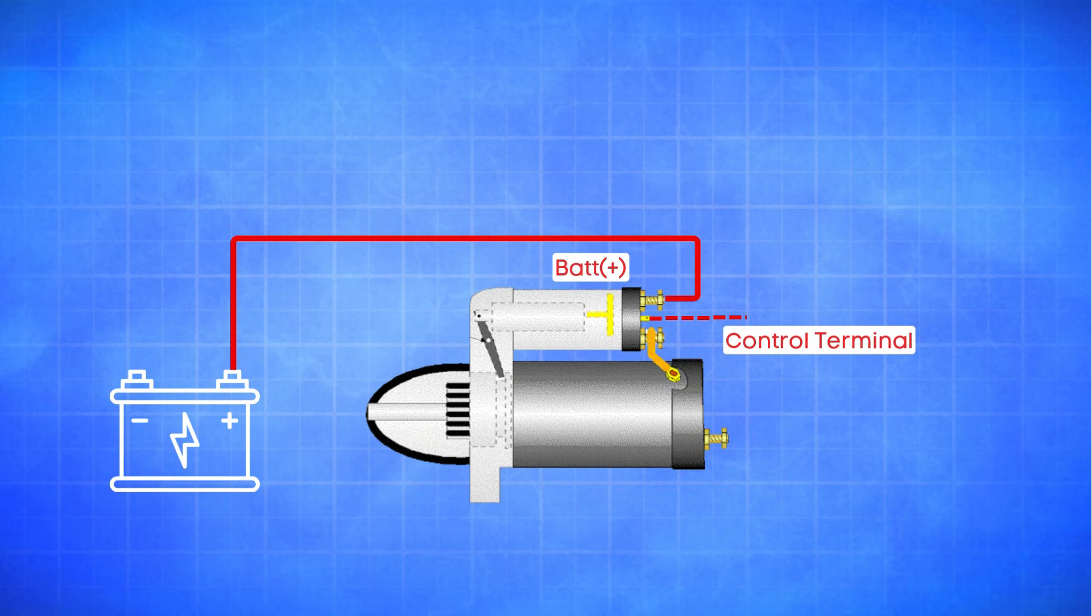All right, now let's talk about the starter motor itself. The starter motor has two terminals. The power terminal is directly connected to the starter terminal on the solenoid. The ground terminal is grounded to the vehicle's chassis or engine block.